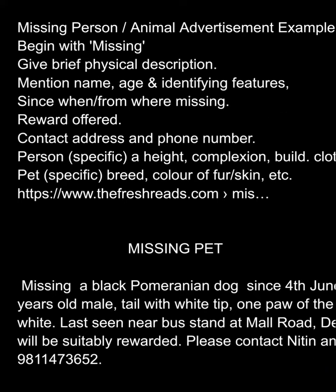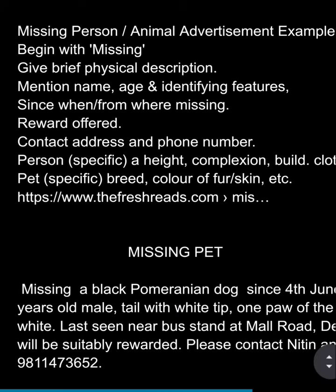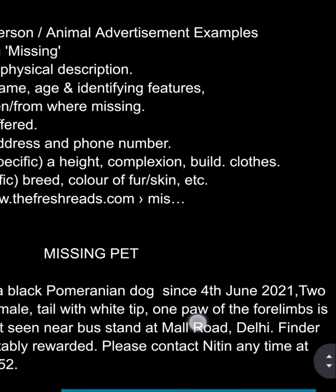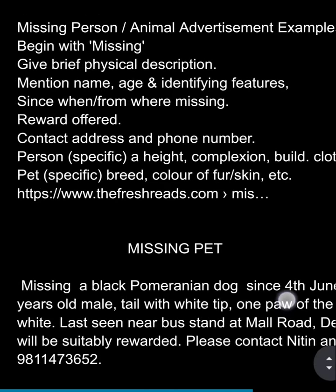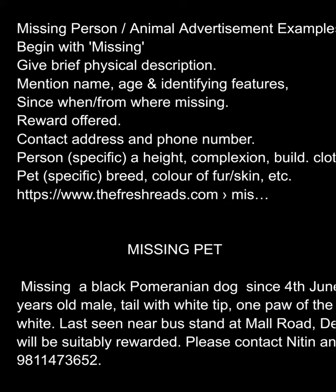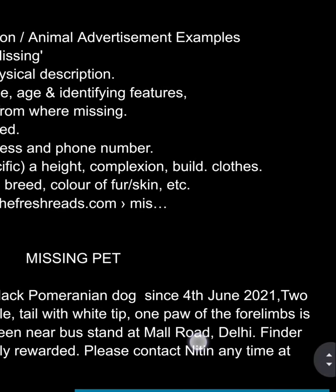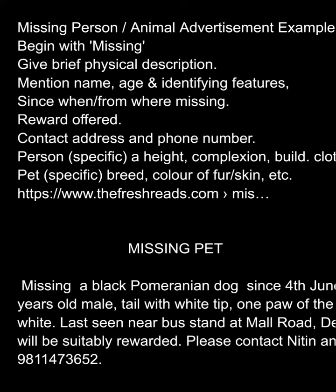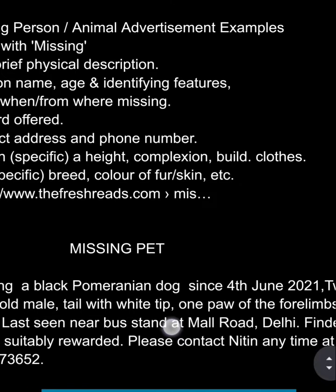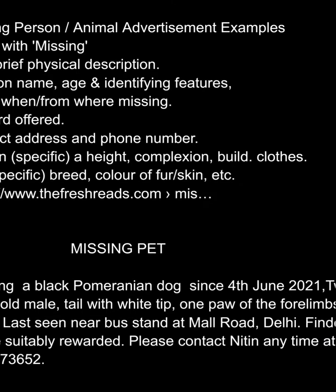You can give your address and complete details accordingly. Missing pet — missing: a black Pomeranian dog, since 4th June 2021, 2 years old, male, tail with white tip, one paw of the four limbs is white. Last seen near Bus Stop 10 at Mall Road Daily.